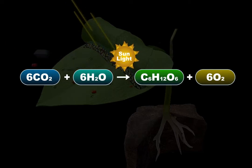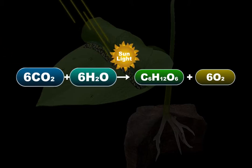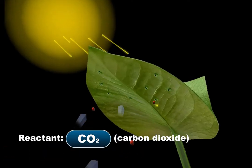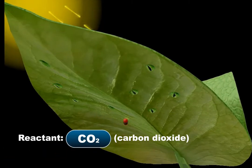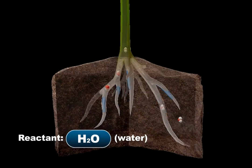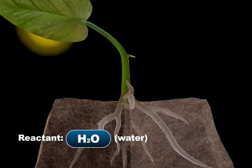On the left side of the equation are the reactants, carbon dioxide and water. Carbon dioxide from the air enters the leaves of the plant through tiny openings called stomata in the leaf's epidermis. Water enters the plant through the roots and is moved up the stem to the leaves via the plant's vascular system.